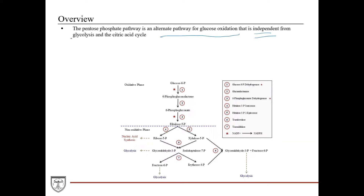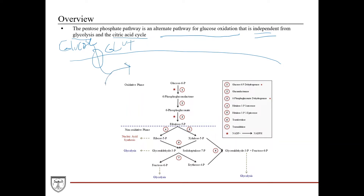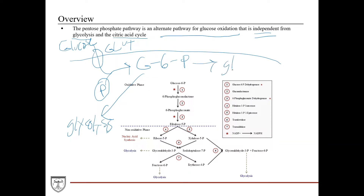It's independent from glycolysis and the citric acid cycle. Glucose is in the bloodstream, enters through one of the GLUT transporters, comes into the cell, and immediately gets phosphorylated by either hexokinase or glucokinase if you're in the liver, forming glucose 6-phosphate. That can go towards glycolysis, glycogen formation, and also the pentose phosphate pathway.